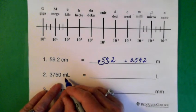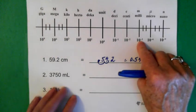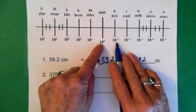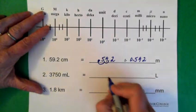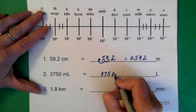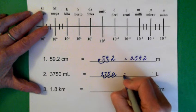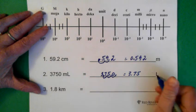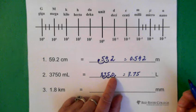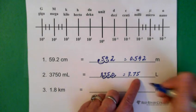Now we have 3,750 milliliters and we want to go to liters. We're starting at milli and going to liters, which is our basic unit — three places to the left. We write out our number, move the decimal one, two, three places to the left. We end up with 3.75 liters. We don't write out the trailing zero because that would imply we've measured to the thousandths place.